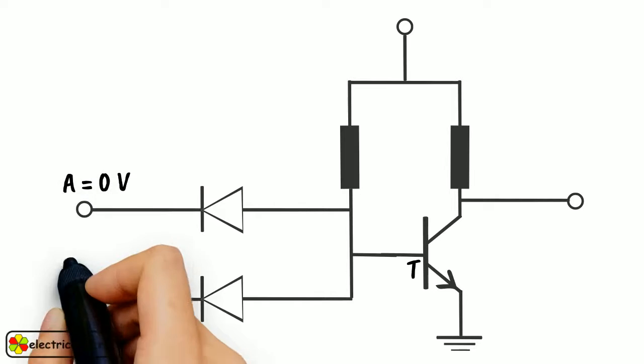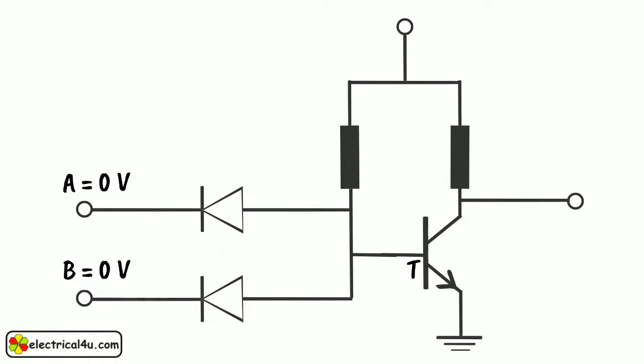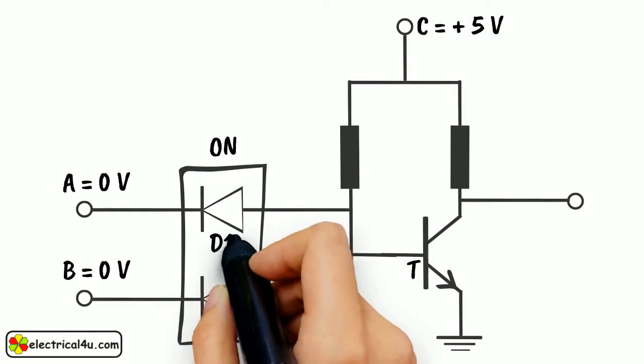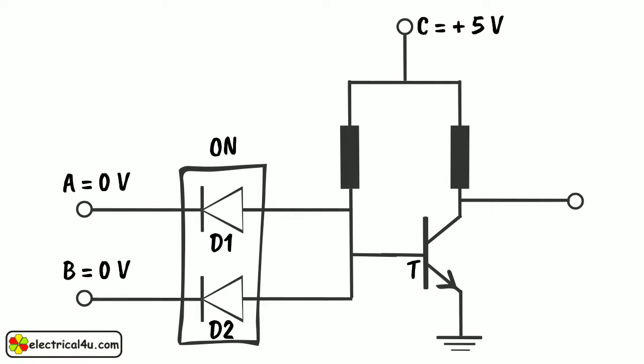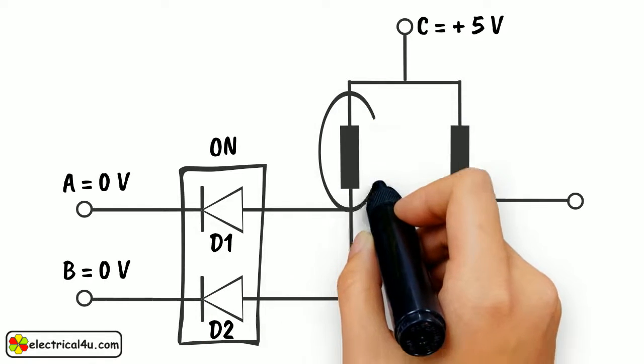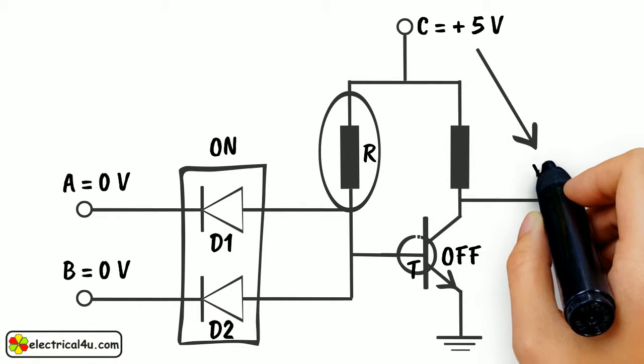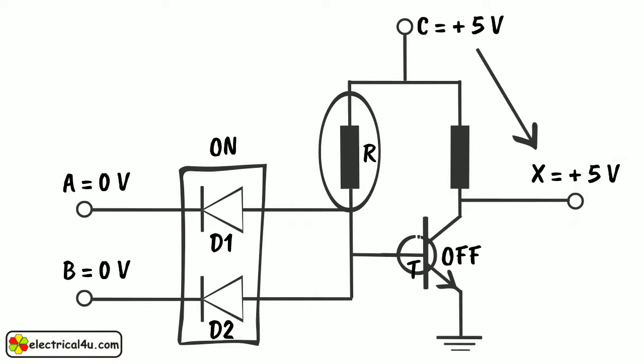When both inputs A and B are given with 0V, both of the diodes are in forward bias condition, that is in ON condition. Supply voltage will get passed to the ground through diodes D1 and D2. The entire supply voltage plus 5V will ideally drop across resistor R, and hence the base terminal of transistor T will not get enough potential to turn ON the transistor. As a result, supply voltage plus 5V will appear at output terminal X, and hence output X will become high or logical 1.